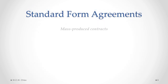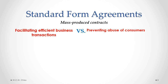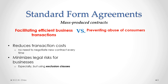Standard Form Agreements are mass-produced contracts for repetitive transactions. Businesses use these agreements to facilitate efficient business transactions by reducing transaction costs — there's no need to negotiate a brand new contract for every single transaction. These standard agreements also minimize legal risks for businesses, ensuring every contract includes important clauses such as exclusion clauses, which help limit and control the legal liability of the business.